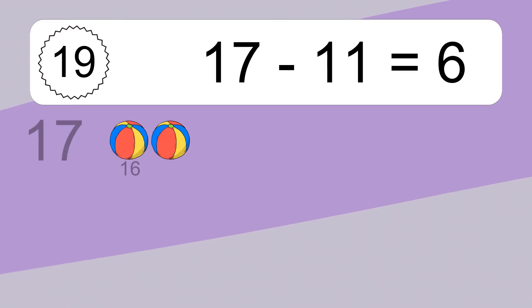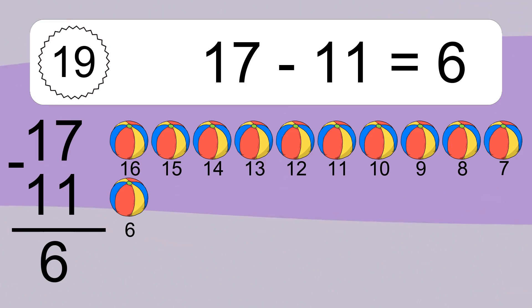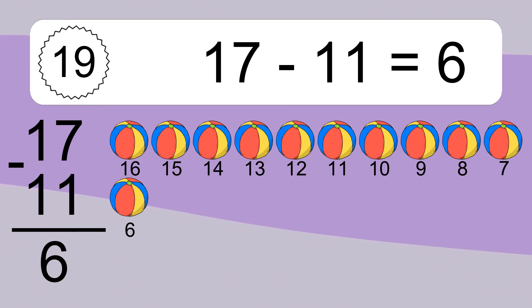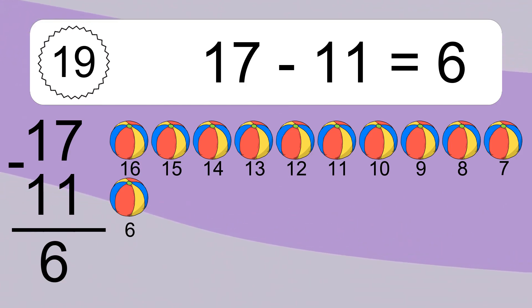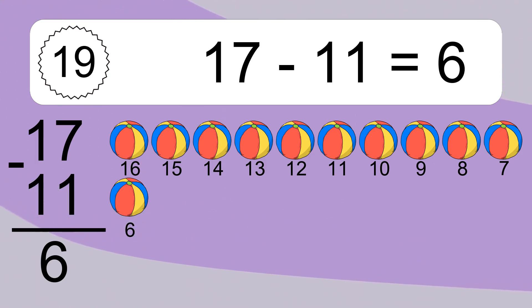17 minus 11 equals what? 17 minus 11 equals 6. Let's count it: 16, 15, 14, 13, 12, 11, 10, 9, 8, 7, 6.